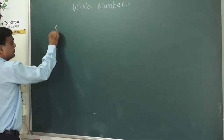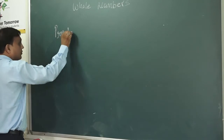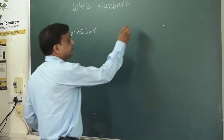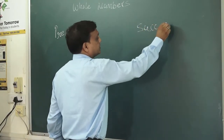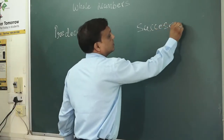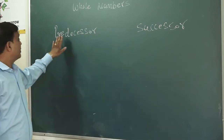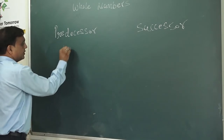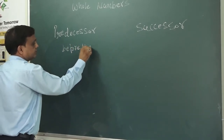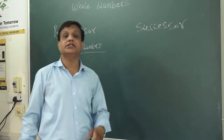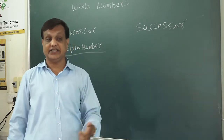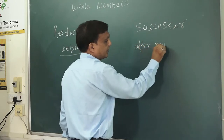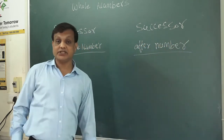Today we are taking two points. One is predecessor and the other is successor. In whole numbers we are seeing predecessor and successor. Predecessor means before number — as we learned in smaller classes like first, second, third standard. Successor means after number.